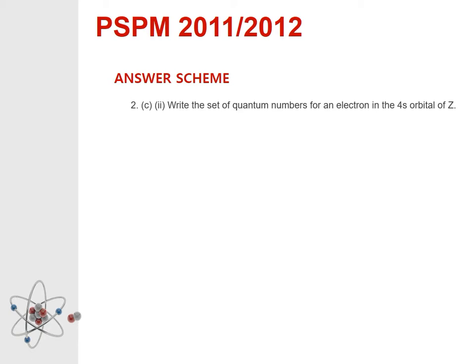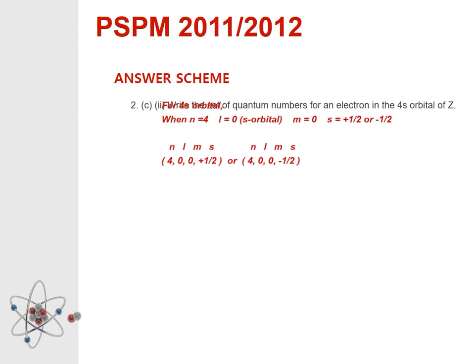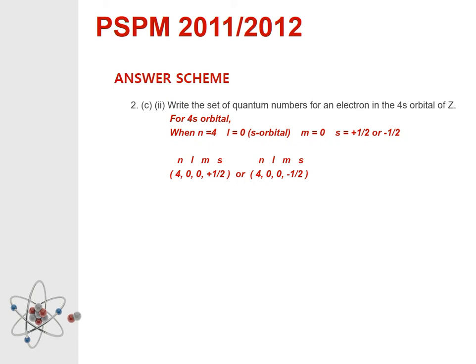Question 2c number 2: Write the set of quantum numbers for an electron in the 4s orbital of Z. For the 4s orbital: principal quantum number n equals 4; angular momentum quantum number l equals 0, which indicates the s orbital.